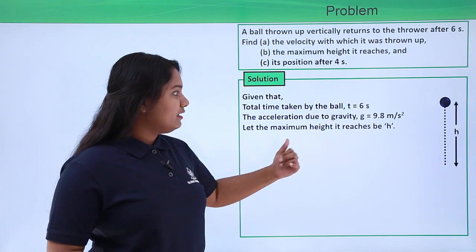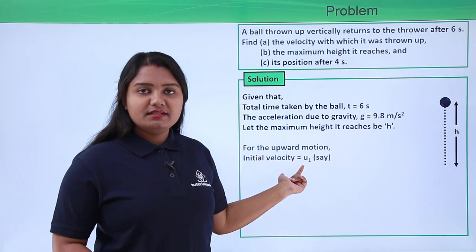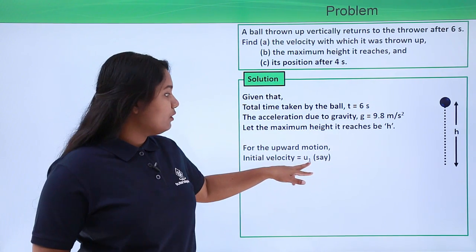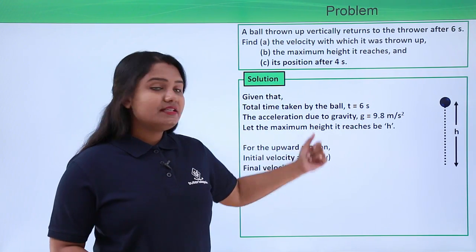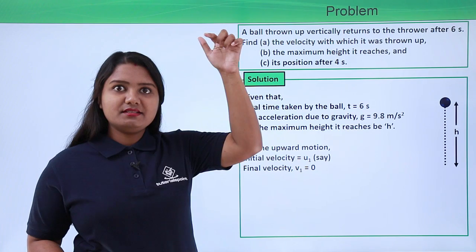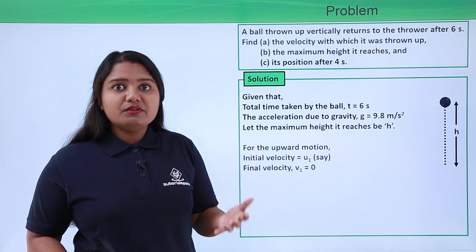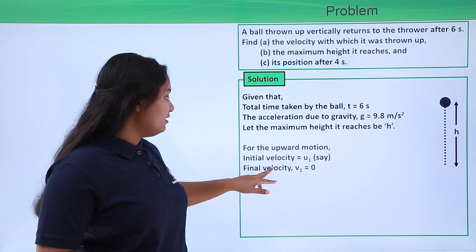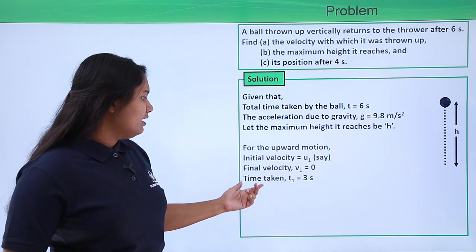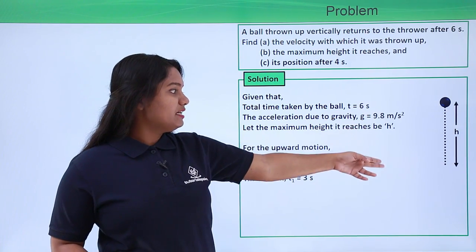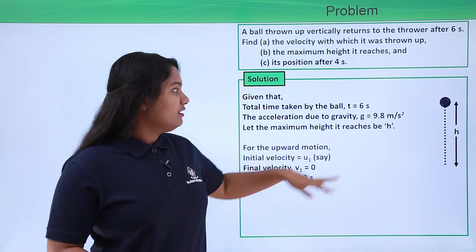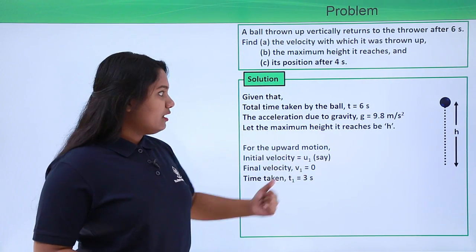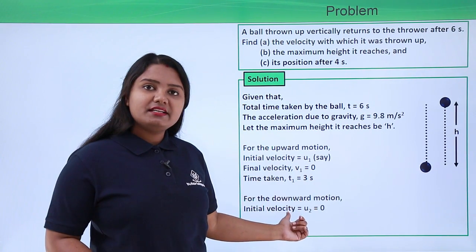For the upward motion, the height is h and the initial velocity is u1. When the ball is thrown upward it is given initial velocity u1, and the final velocity v1 is zero because at the highest point the velocity reduces to zero. The time taken t1 equals the total time divided by two, which is six divided by two — three seconds.